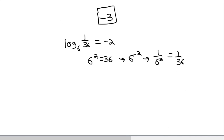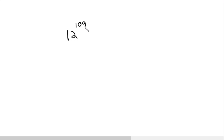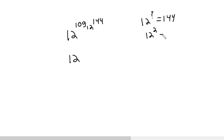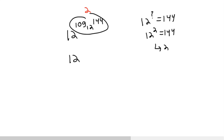Now let's do two more examples that are a bit harder, and they normally trip students up the most when they first start dealing with logarithms. So let's say I was given 12 raised to the power of log base 12 of 144. Let's just approach this logically. Log base 12 of 144 — 12 to what power gives me 144? That's just 2, since 12 squared gives me 144. So this whole expression evaluates to 2, which gives me 12 squared, and that's just 144.